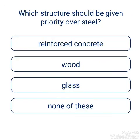Question: Which structure should be given priority over steel? Options: reinforced concrete, wood, glass, none of this. The answer is reinforced concrete.